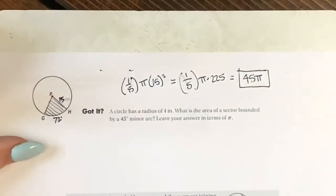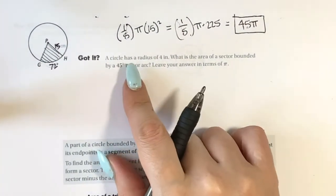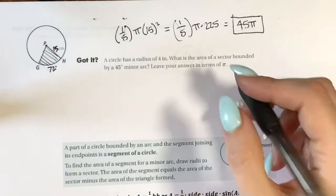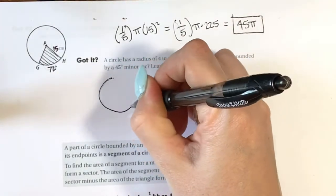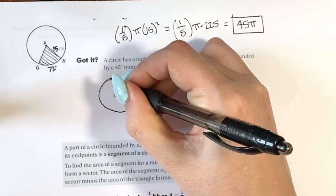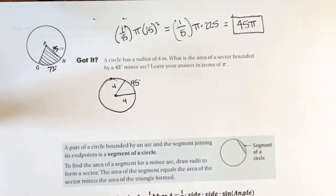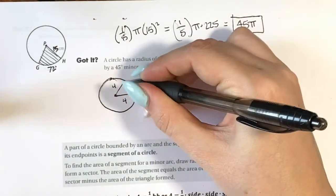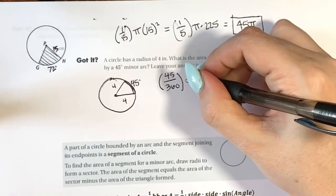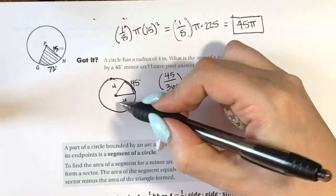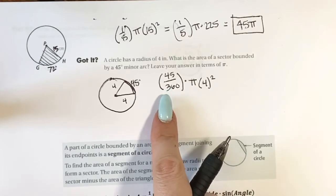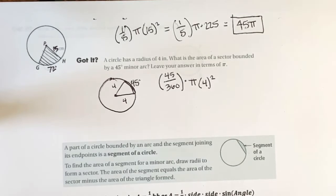Let's try another one. A circle has a radius of 4 inches. What is the area of the sector bounded by a 45-degree minor arc? Leave your answer in terms of pi. They didn't give us a picture, but the radius is 4 inches and this is a 45-degree arc. We'll find the fraction first: 45 divided by 360, then multiply by pi r squared, where the radius is 4, so pi times 4 squared.